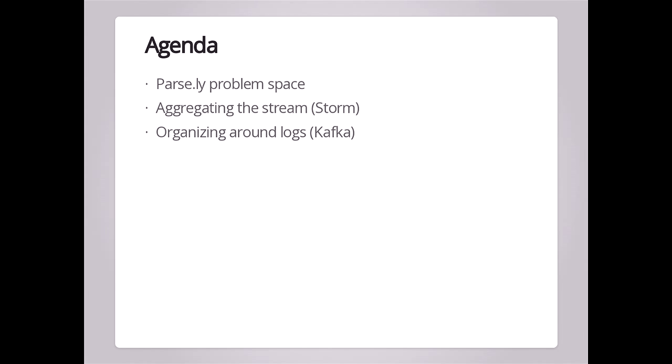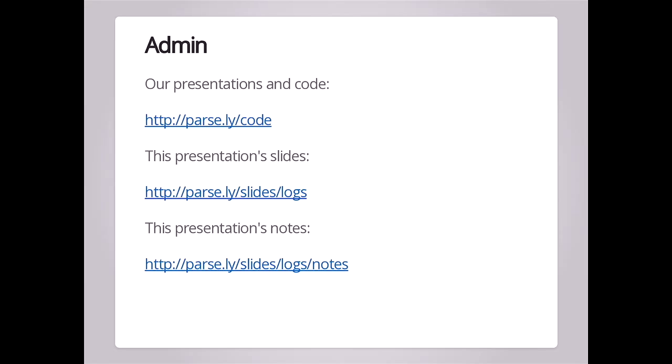We'll talk about how you can aggregate streams of data using Apache Storm, and particularly using Python with Apache Storm. Since it's a JVM technology, we've written some code that helps with that. Then Keith will dive into Kafka and explain why it's a good design principle to organize data processing systems around logs. All of the presentations and code that Parsley has given and open-sourced are available at parse.ly/code, where you can see project links we're talking about today, as well as the web-based slides.